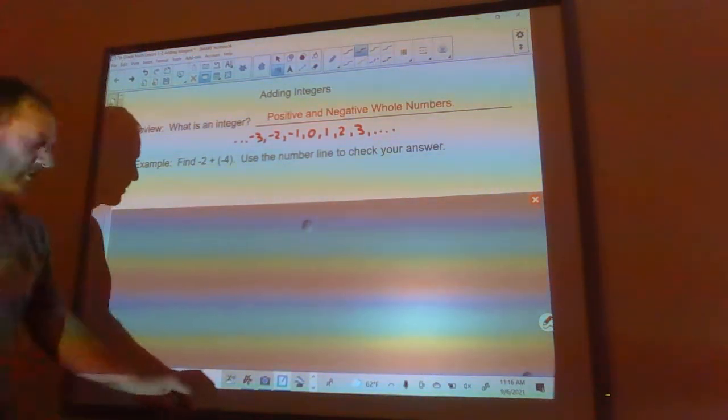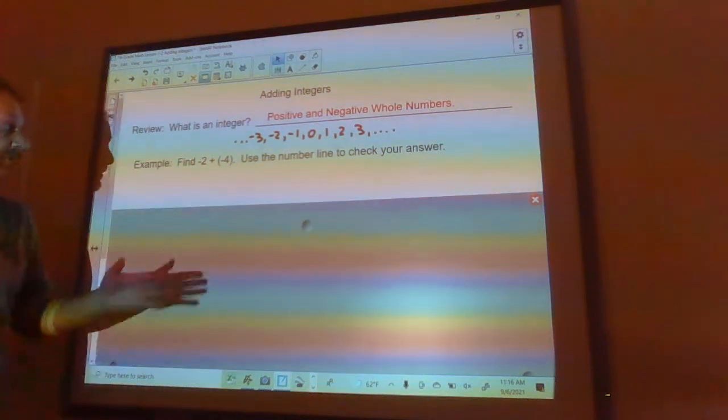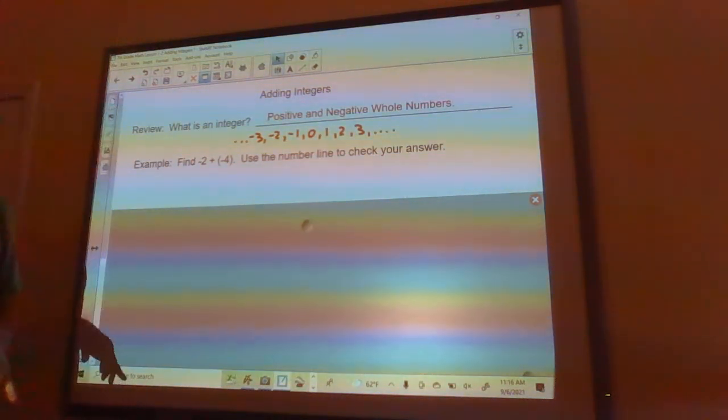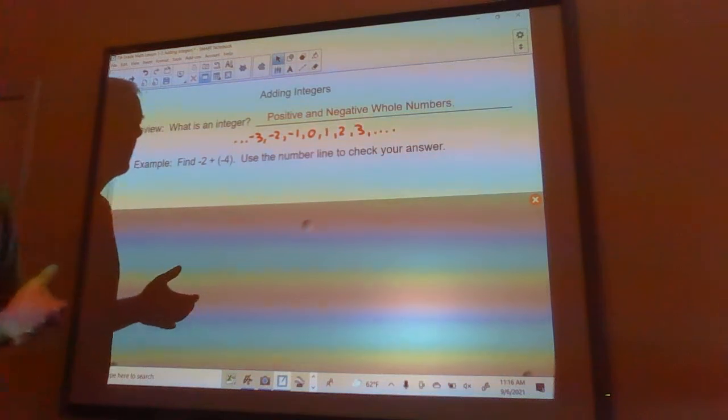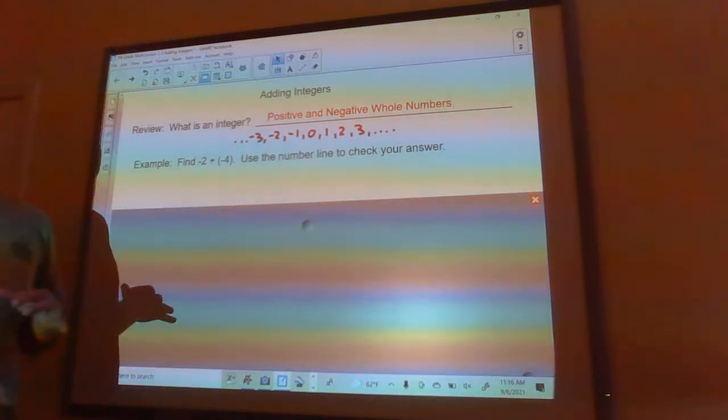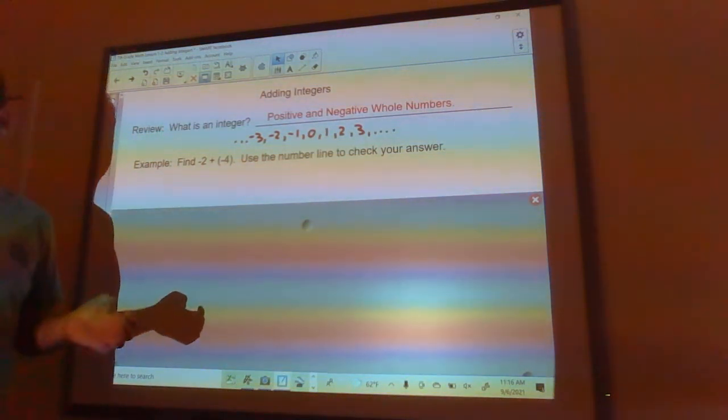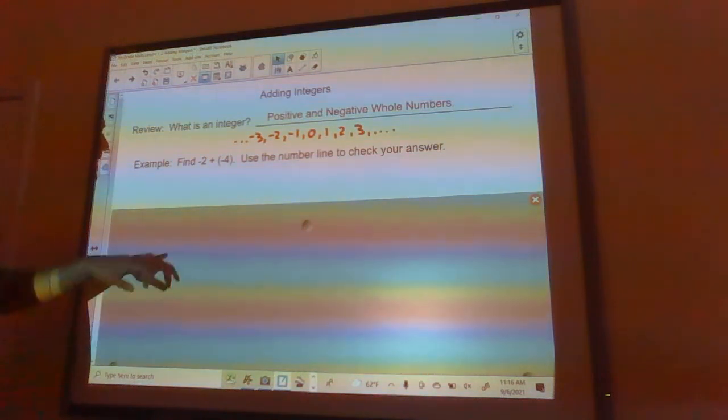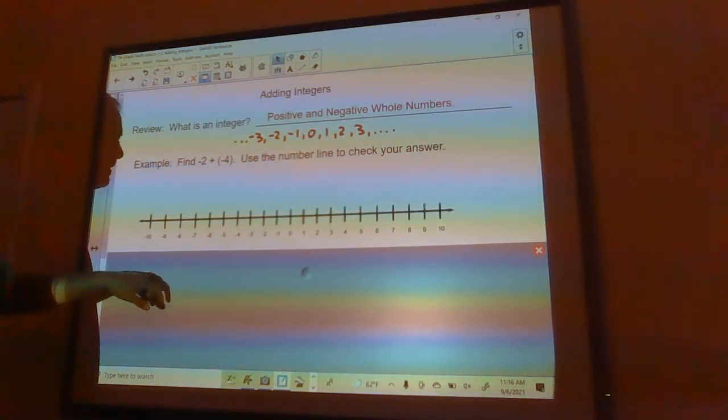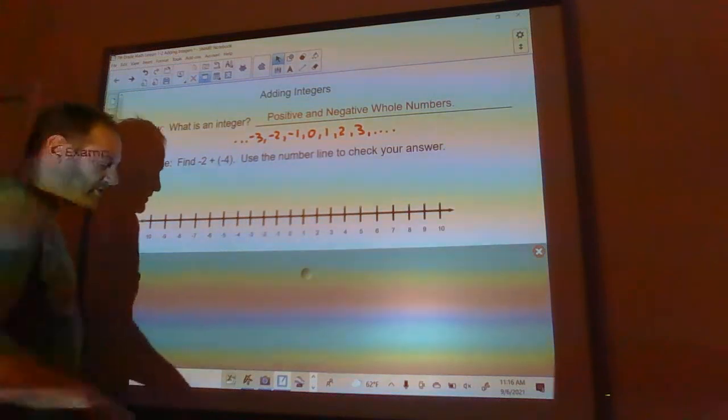So no fractions, no decimals, right? Those are your whole numbers or those are your integers. So how do you find negative 2 plus negative 4? Well, some people really kind of get freaked out by adding negative numbers, and you got to remember that really adding negative numbers is nothing more than subtraction. That's all it is.